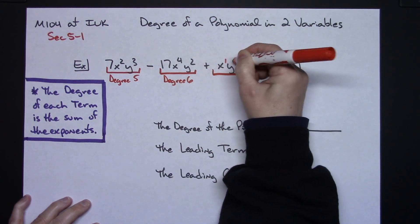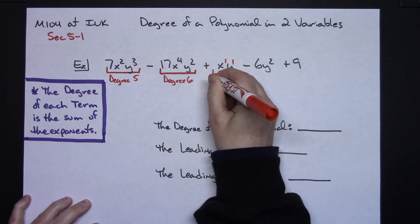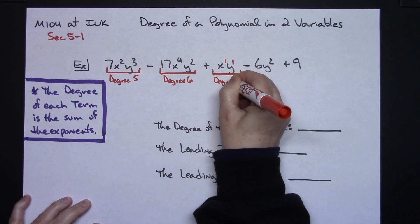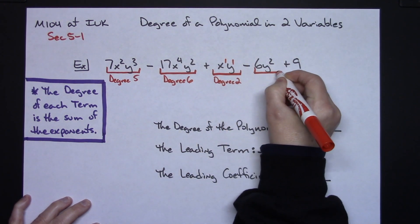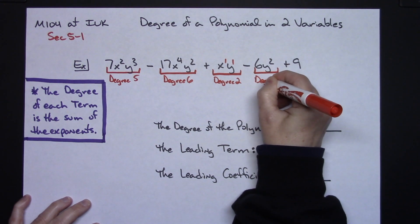I'm going to add these up. Don't forget there's some imaginary ones in there. So this one has a degree of two. This term also has a degree of two.